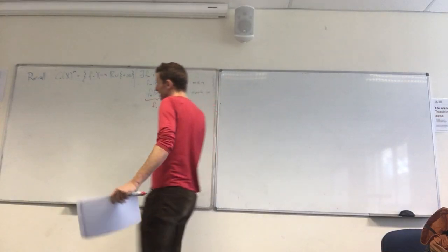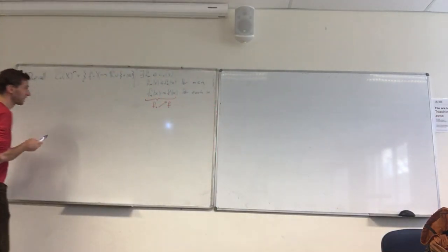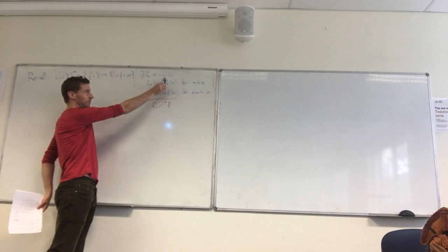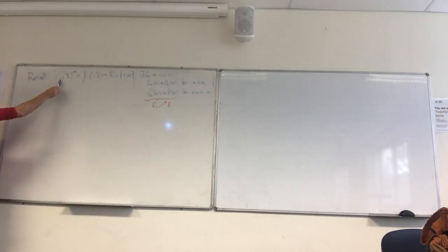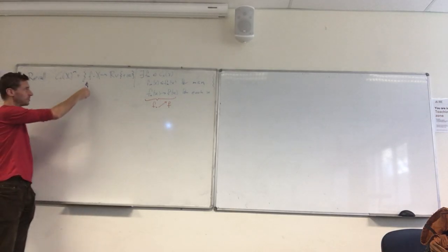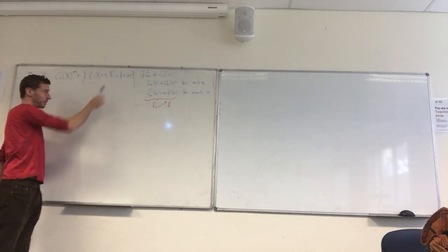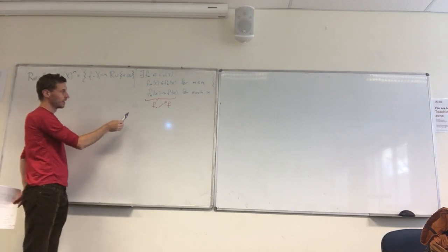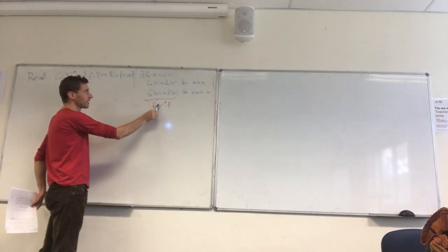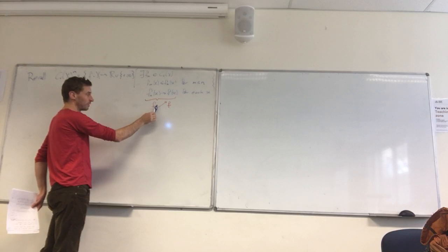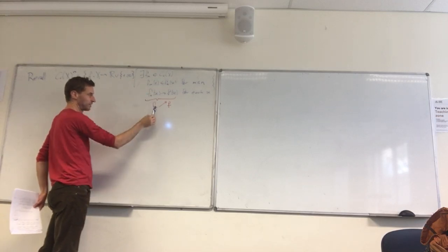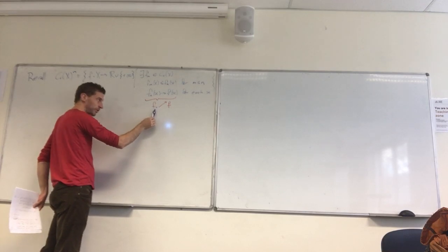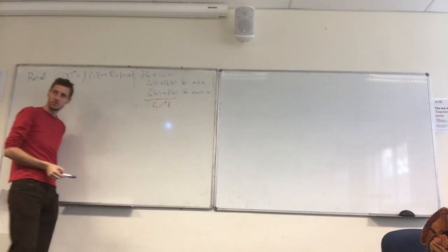Remember we defined this class of functions. First of all, this is the compactly supported continuous functions on X, and then we define CCX superscript M to be those functions that possibly have infinite values for which there's an increasing sequence of functions in this compactly supported continuous class that are converging monotonically upwards to that f.